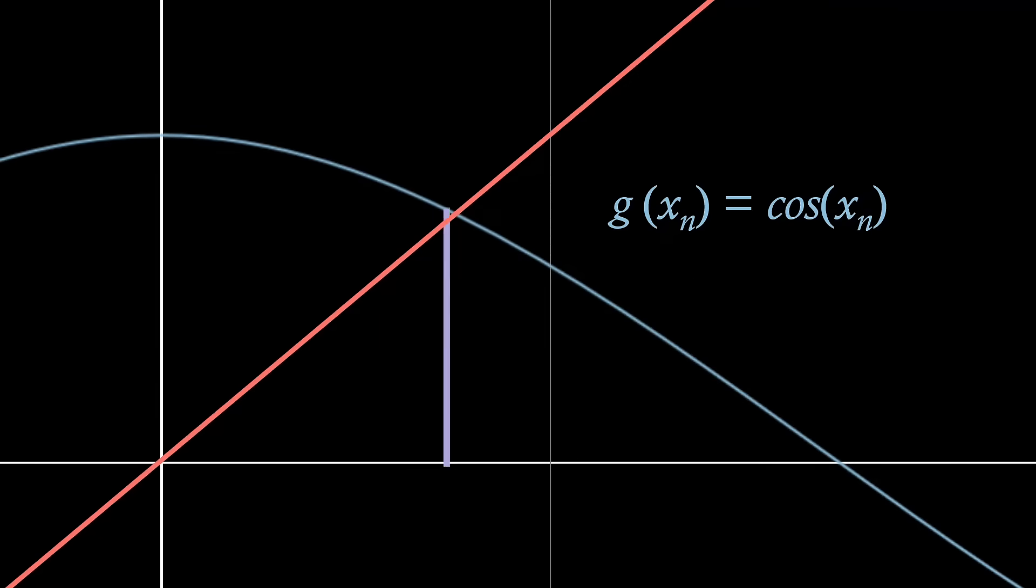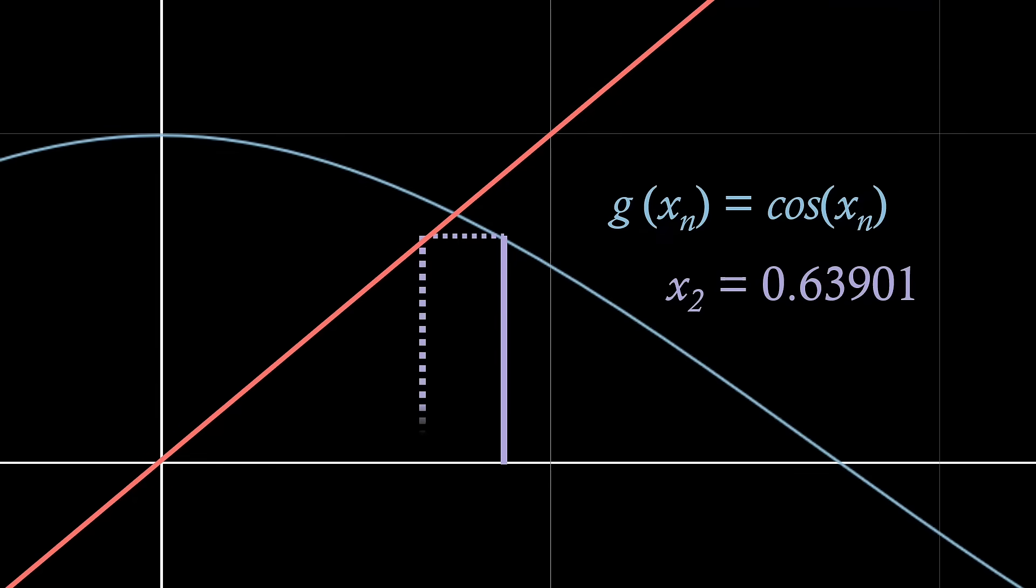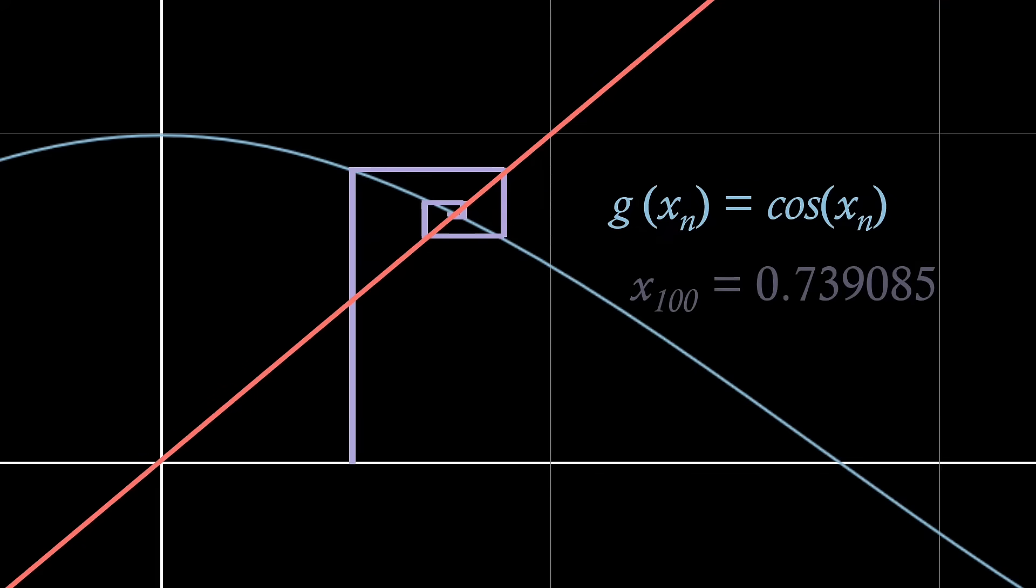If we then repeat this process to find x2, we start to attain a more accurate estimate of our root. For this function, g of x, the convergence spirals towards the root, as shown here, with the root at the 100th iteration being the same as found by the bisection method to six significant figures.